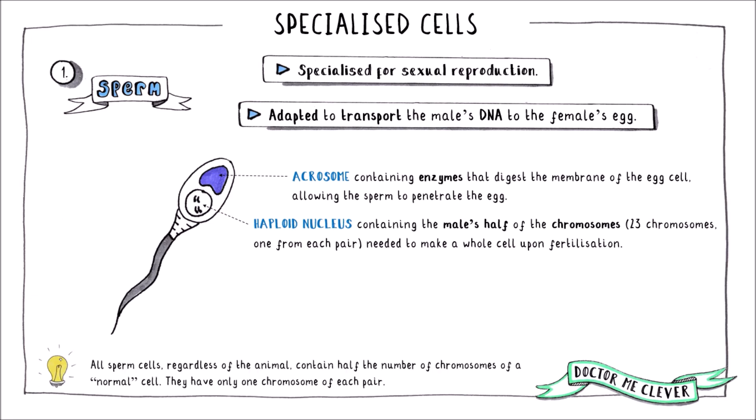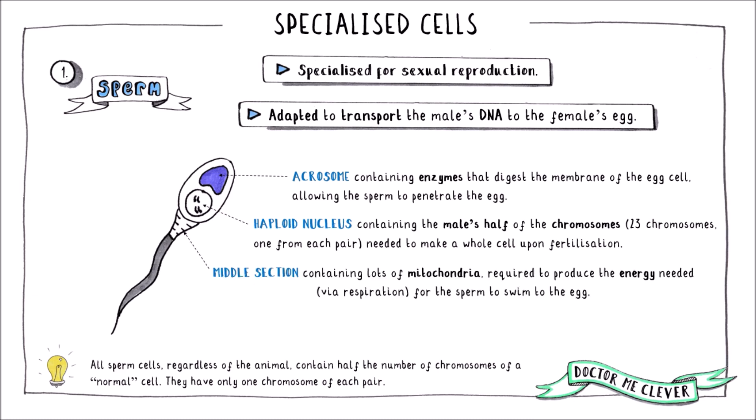Just a quick note for your exam: all sperm cells, whether they be from a kangaroo or an elephant, all contain half the number of chromosomes of a normal body cell, so don't let this throw you in your exam. Sperm cells have a middle section containing lots of mitochondria, because swimming to an egg takes a lot of energy, and of course a long tail that also allows the sperm cell to swim.